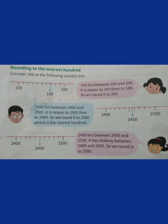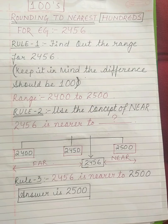Let us see some more examples. The number is 2456. As it is told to find out the rounding to the nearest hundreds, the difference should be 100. So, the range is 2400 to 2500. Using the concept of near, 2456 is nearer to 2500. So, 2456 is rounded up to 2500.